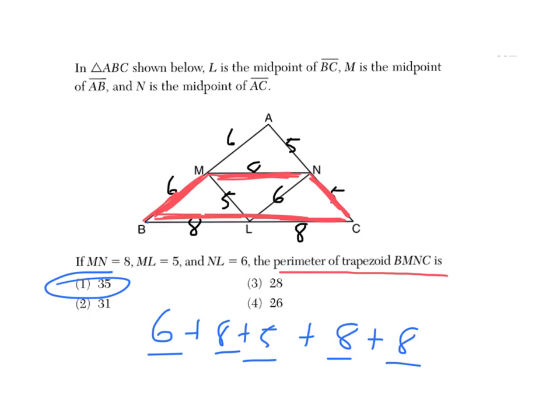I bet there were a lot of students on the test that just added together 6 and 8 and 5. Let's see if that's one of the wrong answers. 6 and 8 and 5 would be 19. Oh, they didn't put that as one of the choices.